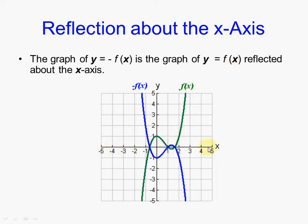So this is the x-axis and we're reflecting things around it, meaning that where there used to be a point on the function right here, it will now land down here. Where there used to be a point right here, it will now reflect across the x-axis down here, and so on.